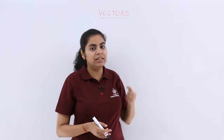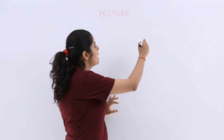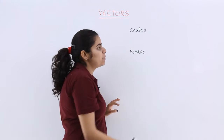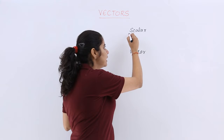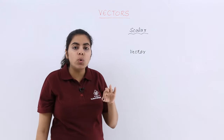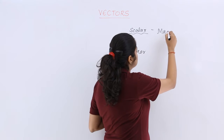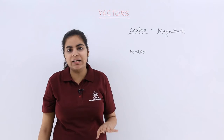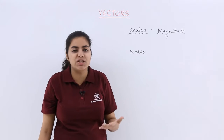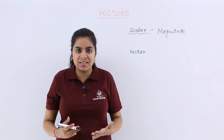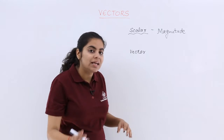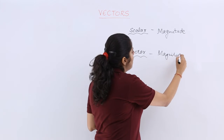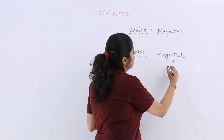Physical quantities can be either divided into scalar or vector quantities. Specifically speaking, scalar quantities are the ones in which only magnitude is considered. There is no question of considering their direction in space. While vector quantities are the ones in which you consider both magnitude and their direction in space.